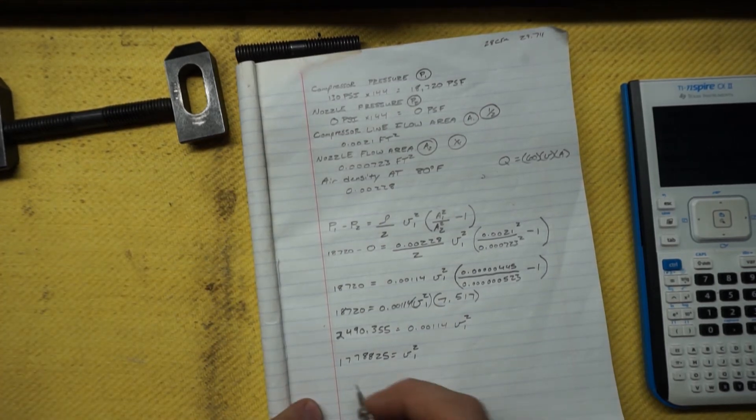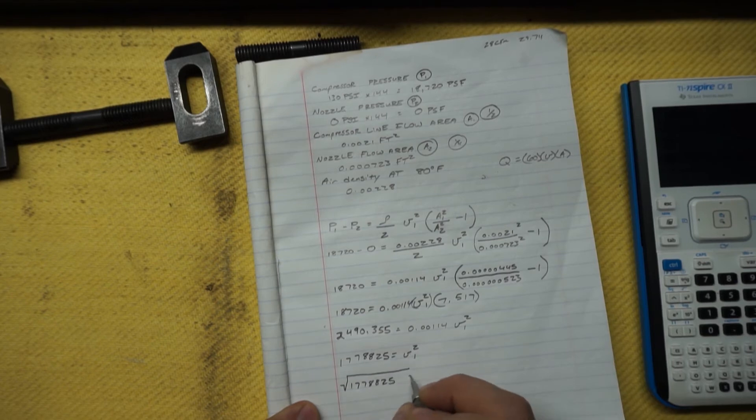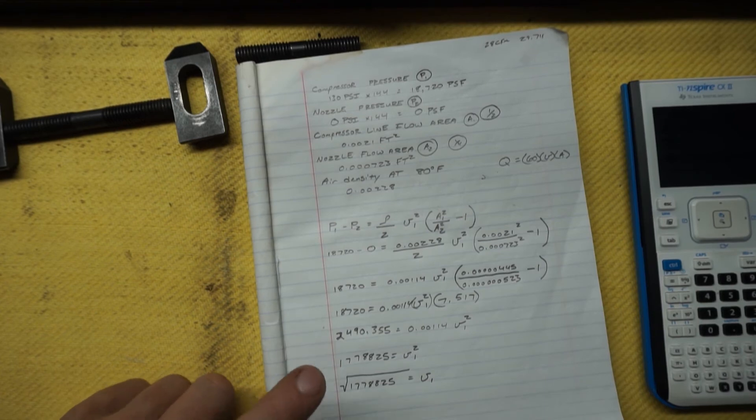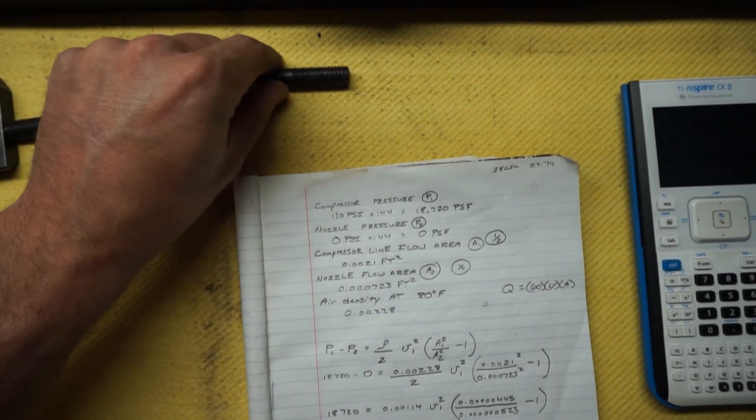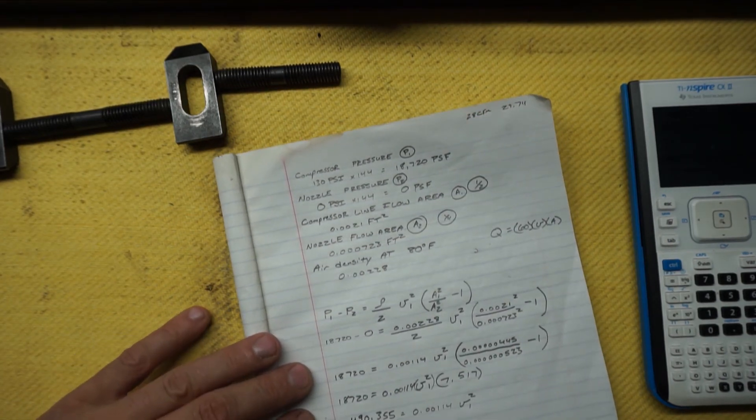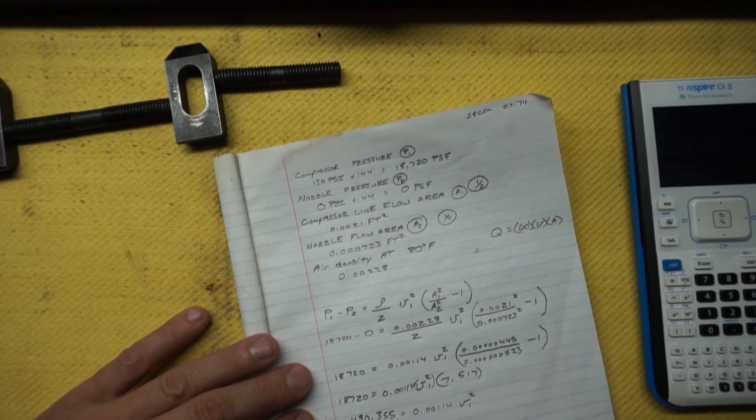Now we need to move this over and divide by it. So the 2,490 divided by that is going to give us 1,778,825 v squared one. Now to get this not squared, so it's just v1, we have to take the root of the other side. So the square root of 1,778,825 equals velocity. Whatever this root is, is the feet per second that needs to be coming out right after our dryer, minimum, to maintain the 130. So it's got to be the number or greater. So v1 equals 1,333.726 feet per second is the speed.